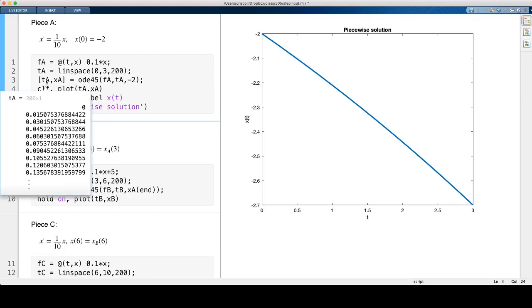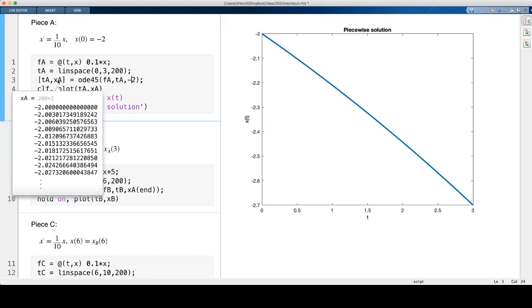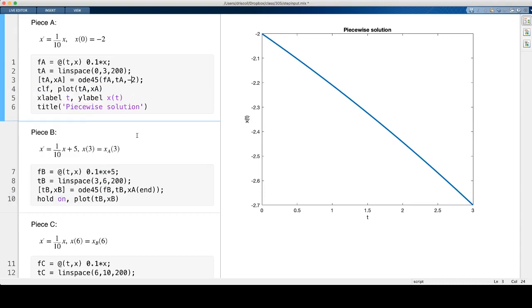Now that the solution's done, this ta is now a vector of 200 times from 0 to 3, and xa is a vector of 200 solution values at those same times.